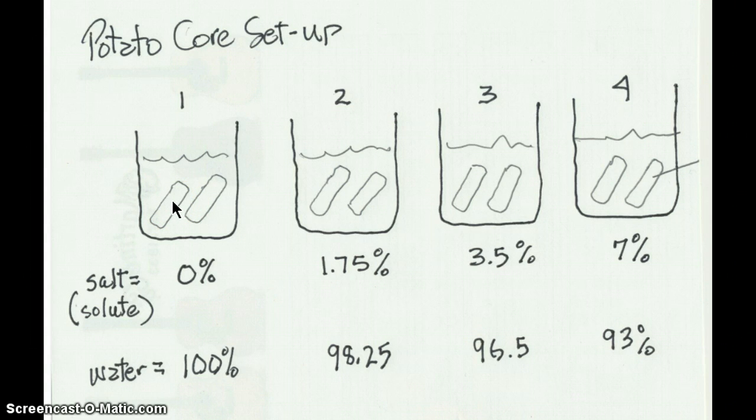But if this one is 41.50 and this one is 39.80, add those two together, divide by two, and that's the number you put as your beginning average volume. So you cut your cores, you measure and get their average volume for the two of them, enter that data in your data table.